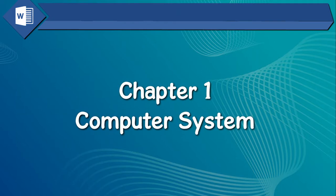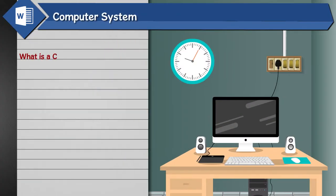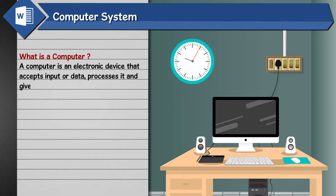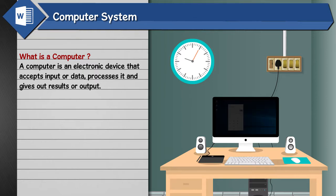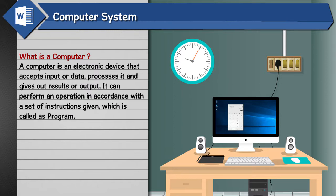Chapter 1: Computer System. What is a computer? A computer is an electronic device that accepts input or data, processes it and gives out results or output. It can perform an operation in accordance with a set of instructions given, which is called a program.